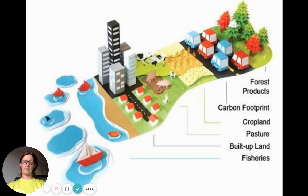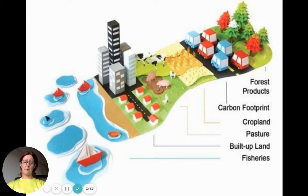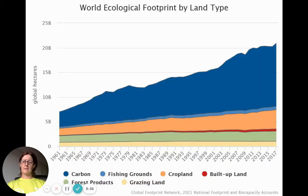You can see the components here — your carbon footprint would also require an area of land. This depends on the level of economic development of a country as to how it is made up. So if you are eating a lot of meat, then you might require a lot more grazing land, for example. This changes depending on your economic status. You can see here since the 1960s how the world's ecological footprint has increased drastically, and the components of this.